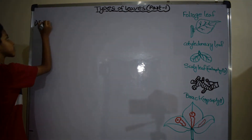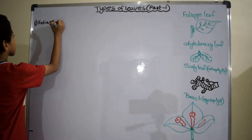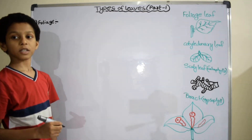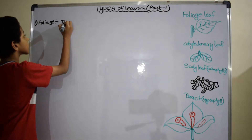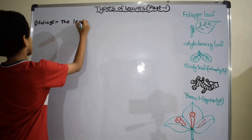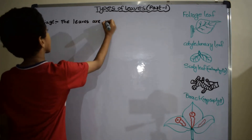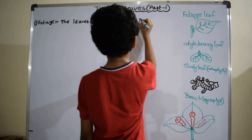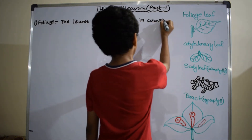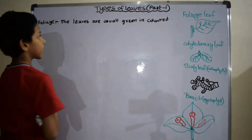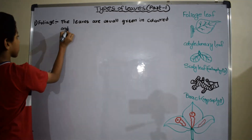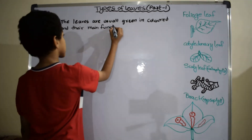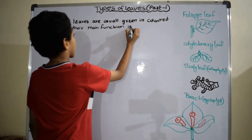First one: foliose leaves. The leaves are usually green in color and their main function is photosynthesis.